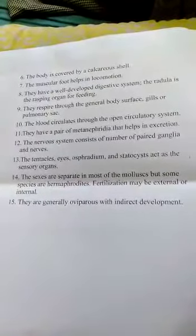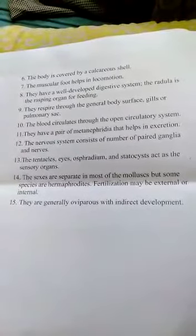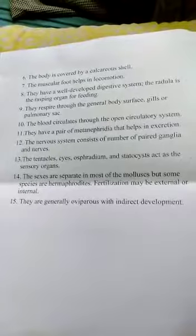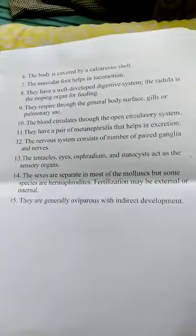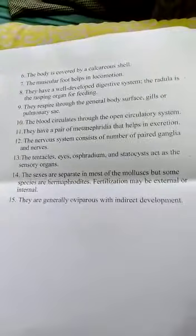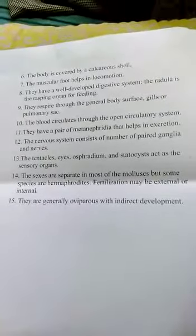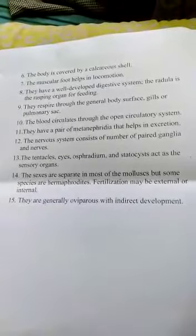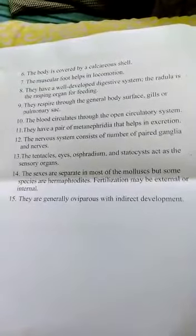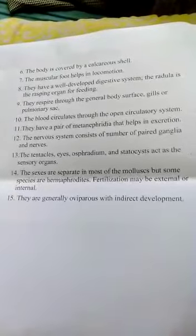They respire through the general body surface, gills, or pulmonary sac. The blood circulates through an open circulatory system. Haemocyanin is the respiratory pigment present in the blood.